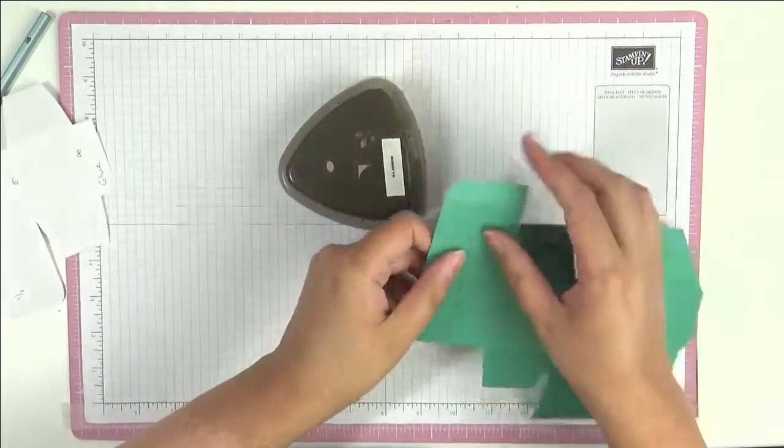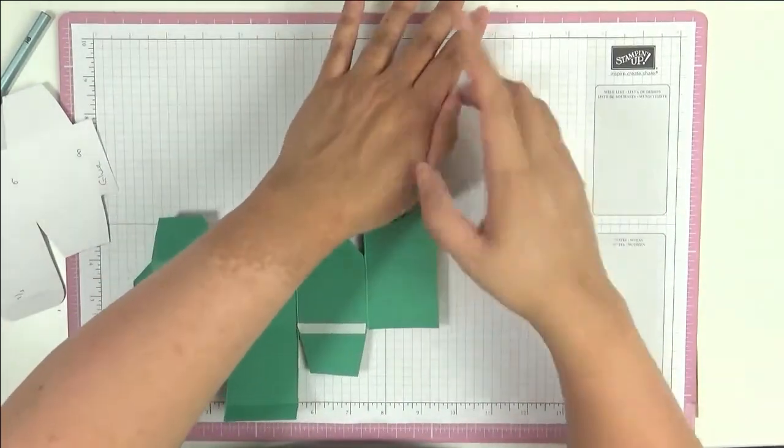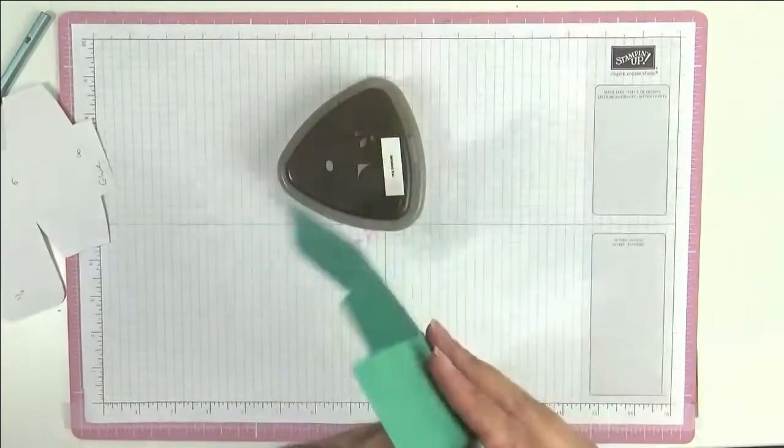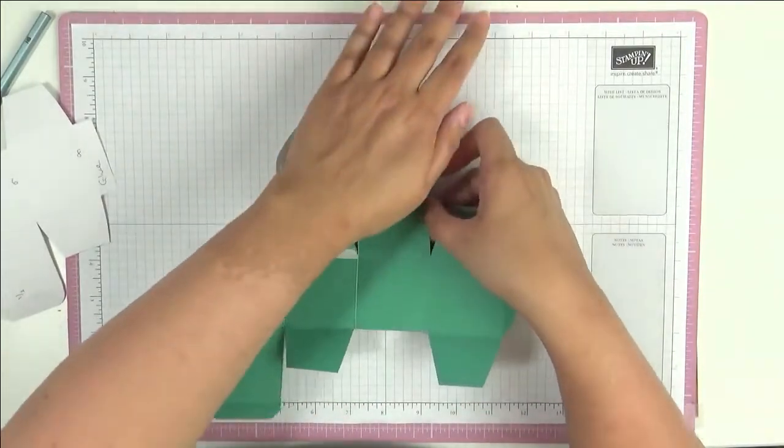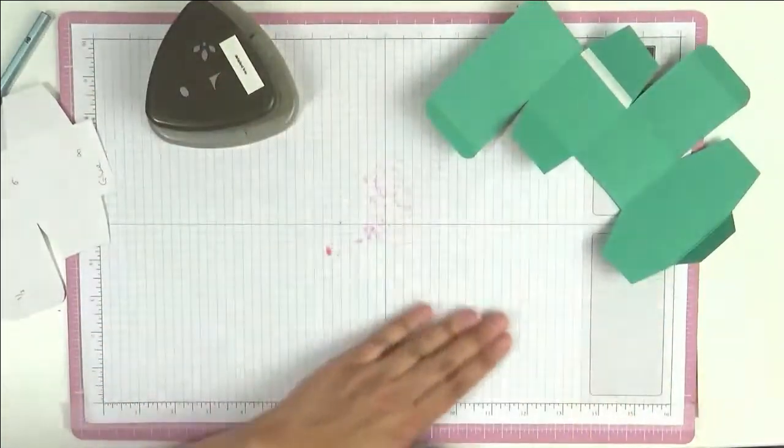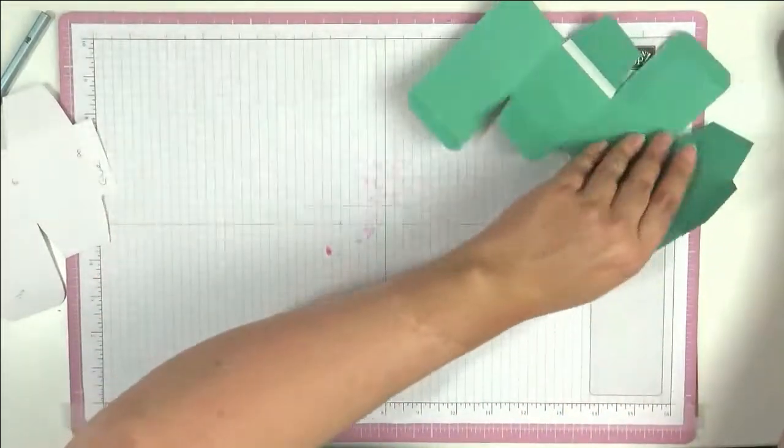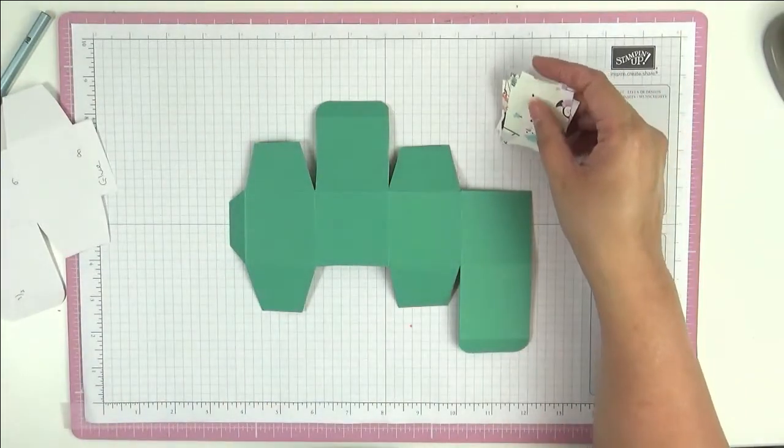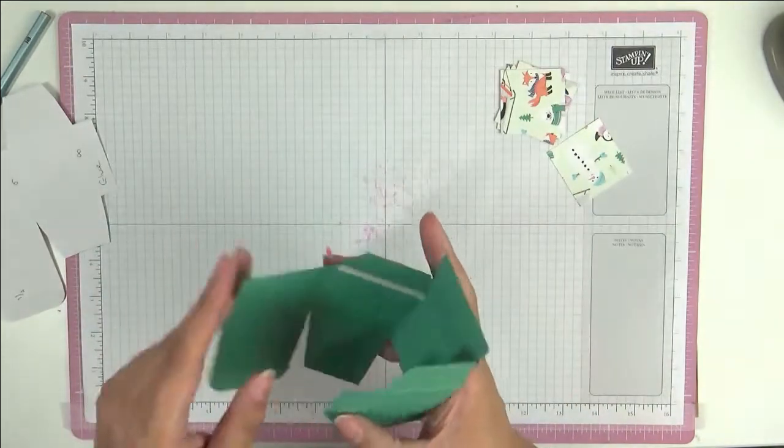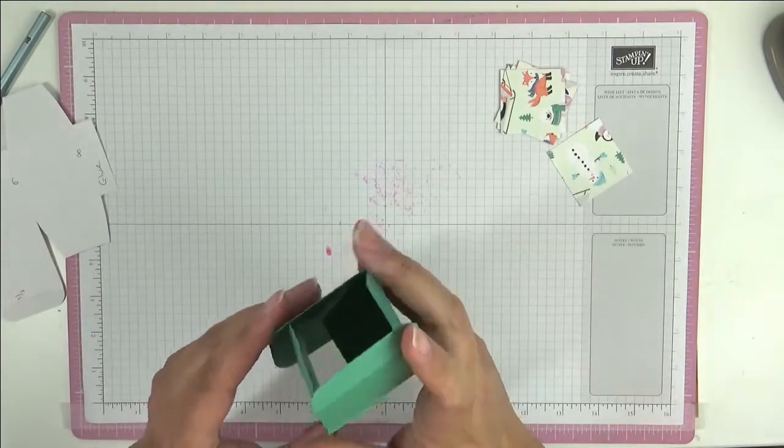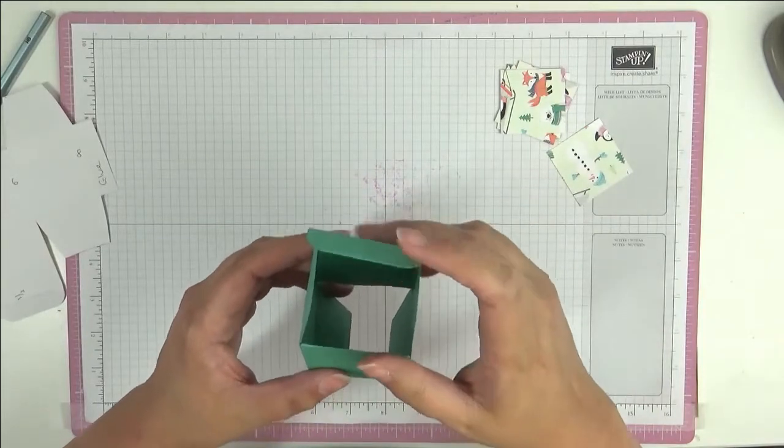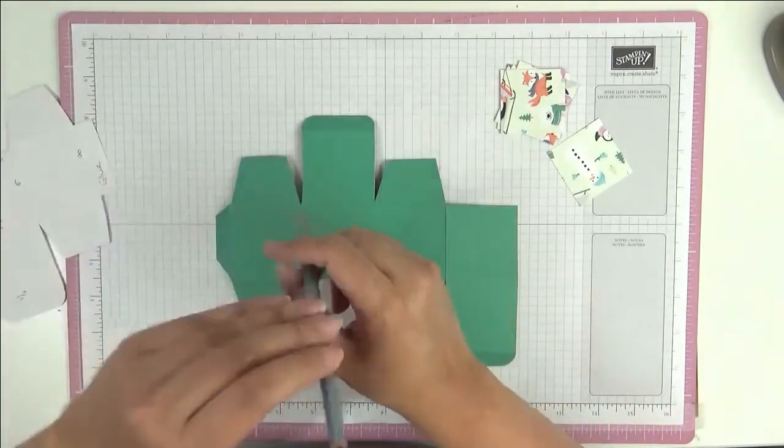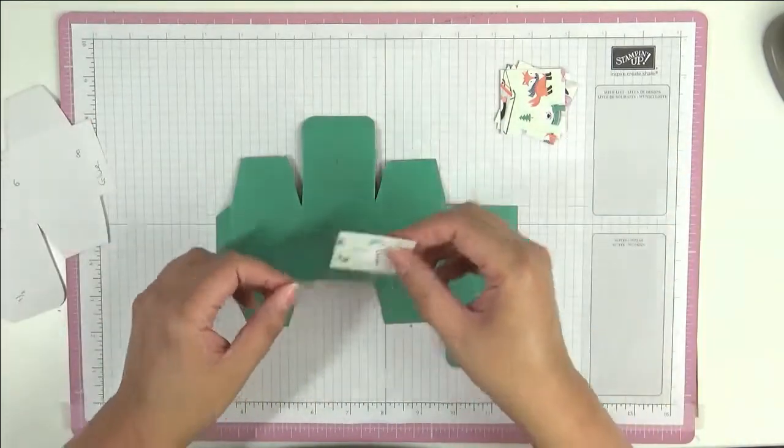Now on these long tabs that we cut nothing off, I am just going to round the corners using the detailed trio punch. This just helps everything to fold more easily. So now we want to put our paper on. It doesn't really matter which way you have this, but for argument's sake I am going to make this my top, so I am going to put a T here. Don't worry, it is going to all be covered.